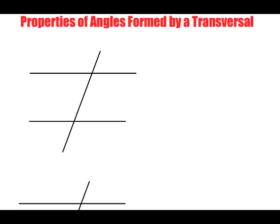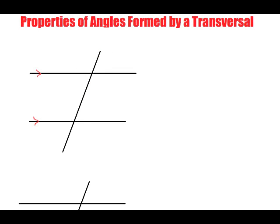Properties of angles formed by a transversal. This is our transversal line — a transversal line is a line that crosses two lines that are perpendicular to one another. So these two lines are perpendicular to one another, and the line that crosses through them is known as the transversal.